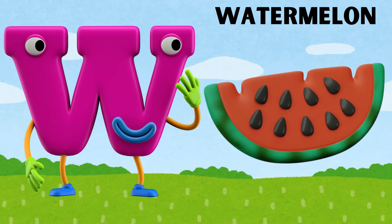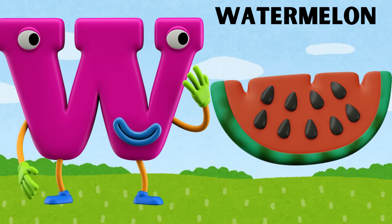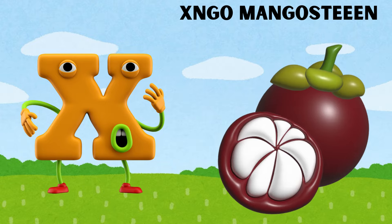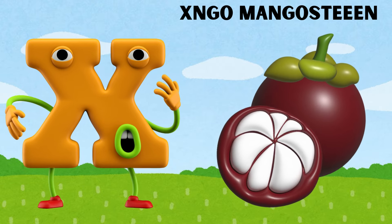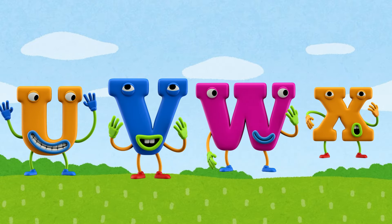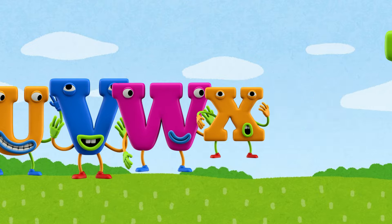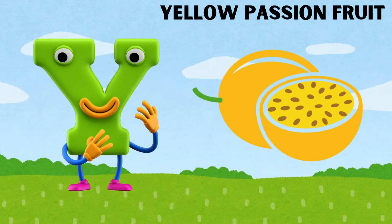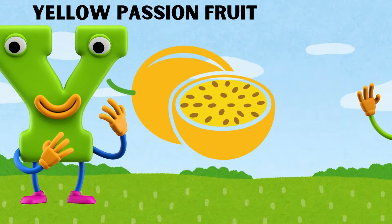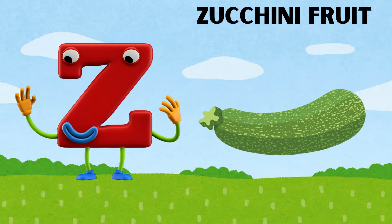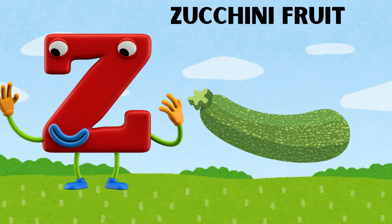W is for watermelon, w-w-w-watermelon. X is for xango mangosteen, x-x-xango mangosteen. Y is for yellow passion fruit, y-y-yellow passion fruit. Z is for zucchini fruit, z-z-zucchini fruit.